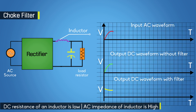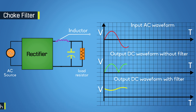Although the inductor efficiently removes AC ripple, a small percentage of AC ripple will still be present in the filtered signal. These ripples are then removed by the capacitor connected in parallel to the load resistor. The DC output signal is now almost free from AC components, and this regulated DC can be used in any application.